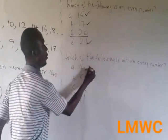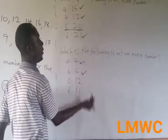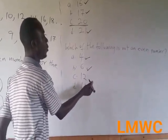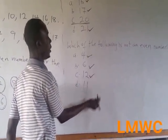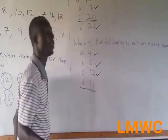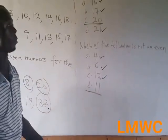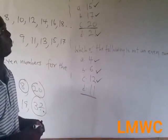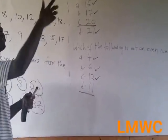Which of the following is not an even number? We know 4 is an even number, 6 is an even number, because they are all divisible by 2. This is also an even number. So this means 11 is not an even number, because 11 is not divisible by 2.